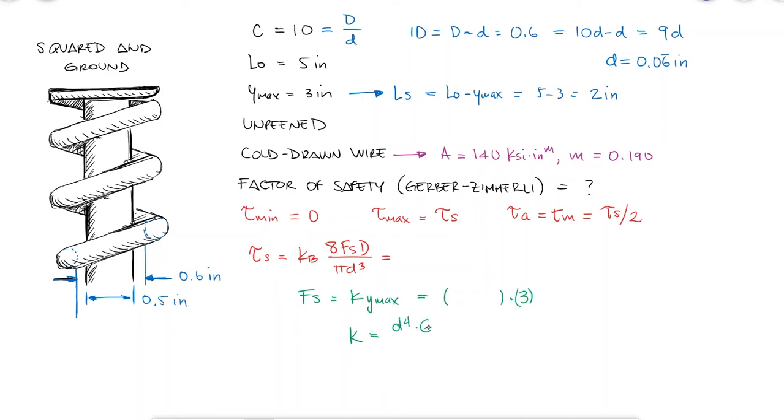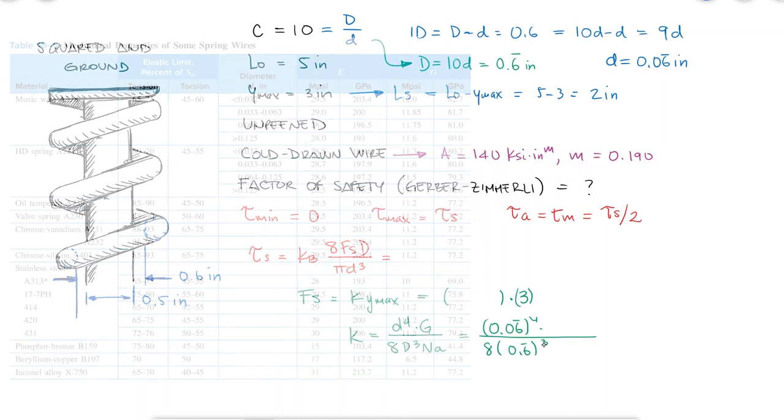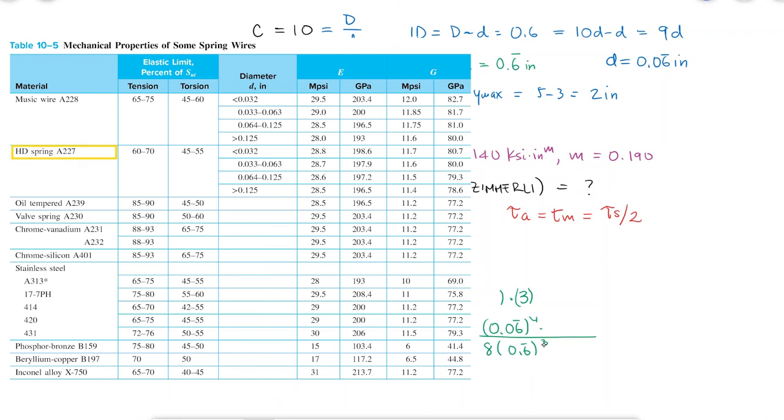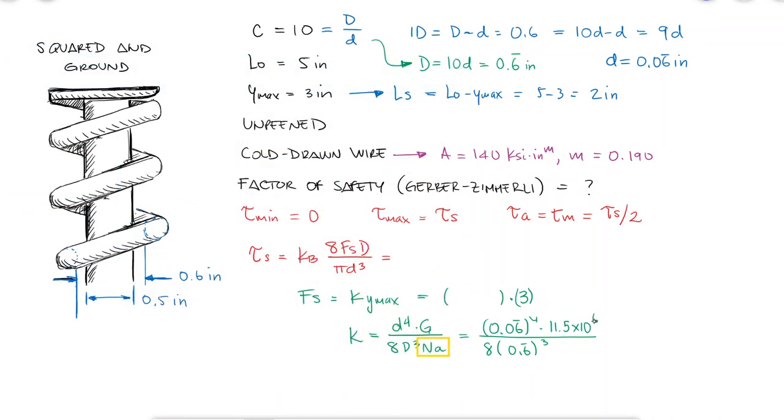For the spring constant of the spring, we need the coil diameter, capital D, the shear modulus for cold drawn wire for diameters between 64 and 125 thousandths of an inch, and the number of active coils.